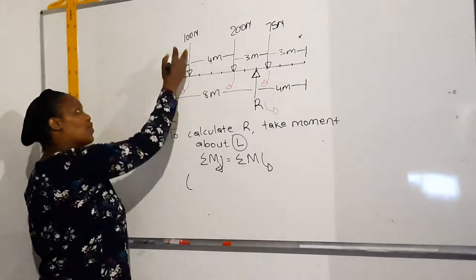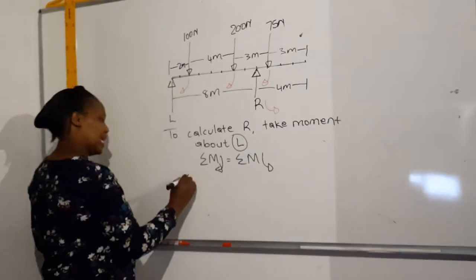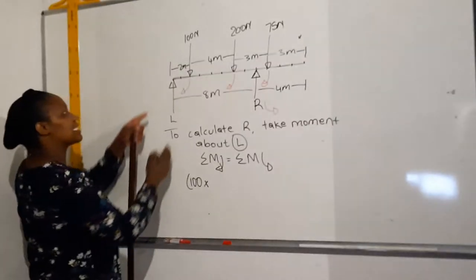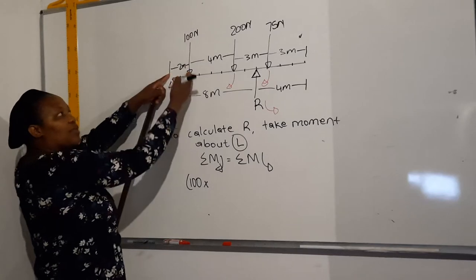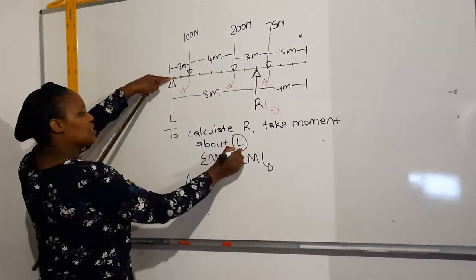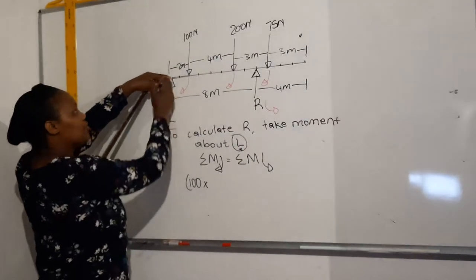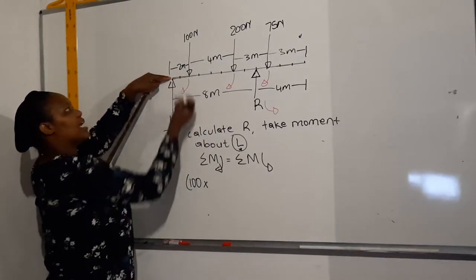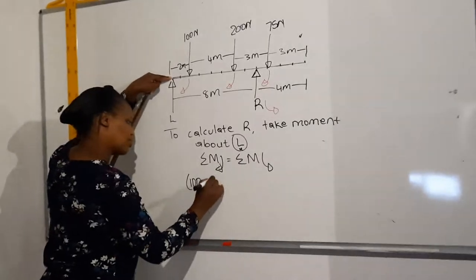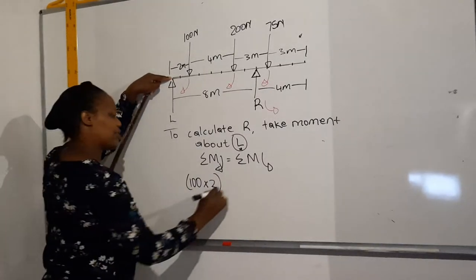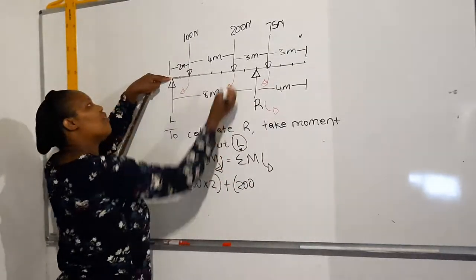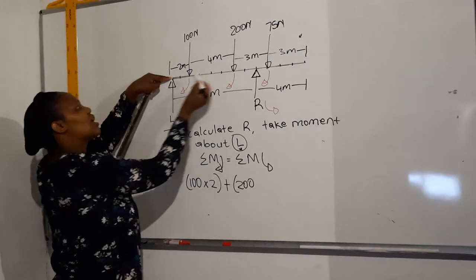So we look at the first force, the 100 newton force. Now the moment of that force will be the force times the distance. The distance is from the force to the pivot that you have chosen. You have chosen L as a pivot. If you say you take moments about L, you mean L is the pivot. So you ask yourself, how far is 100 from L? It's 2 meters away, so you multiply by 2.